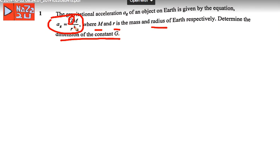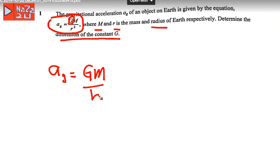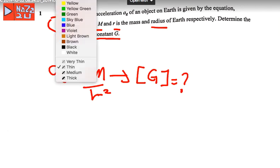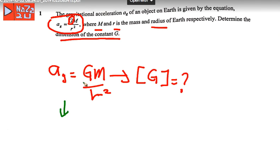So this is constant G. From the equation for acceleration, a = Gm over r squared. To find the dimension of G, we rearrange: G is equal to a times r squared divided by m.